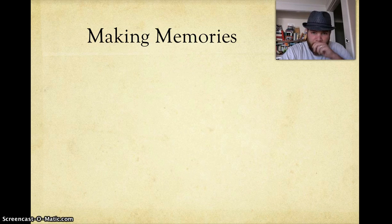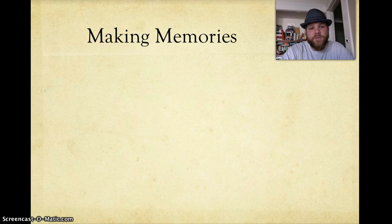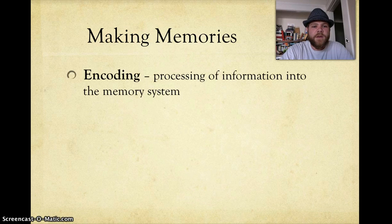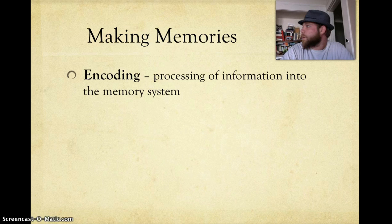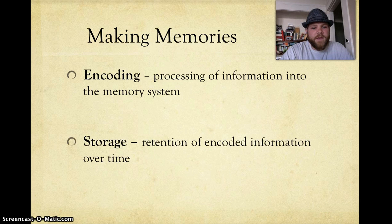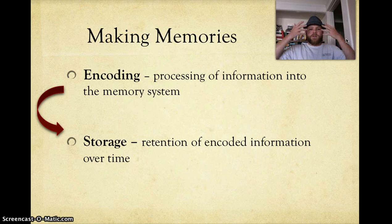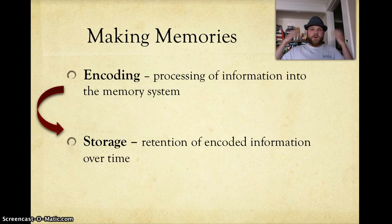Scientists and psychologists have devised a basic structure as to how memories are made, and these involve three steps. The first step is known as encoding — this is where we process information into the memory system. The next phase is storage, the retention of encoded information over time. So information enters our senses and then is stored in our memory banks.